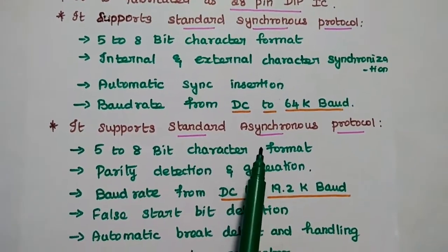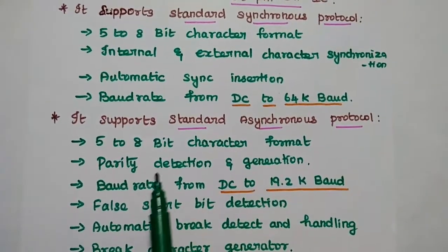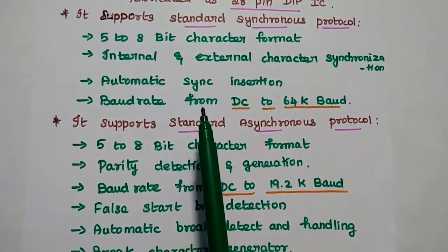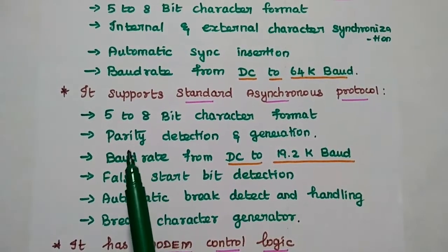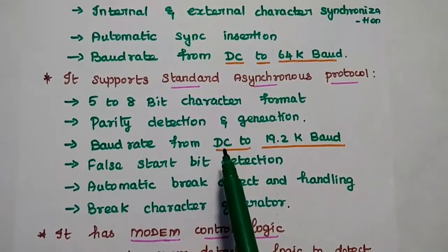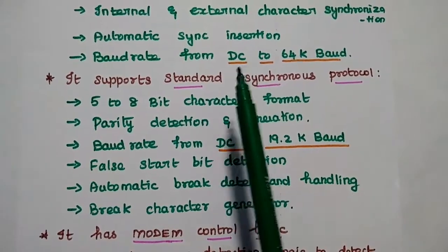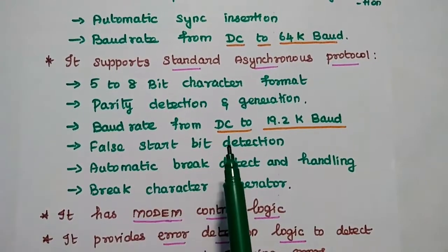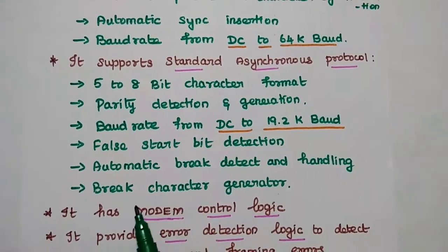For the asynchronous protocol, it also has a 5 to 8-bit character format. Parity detection and generation is available in asynchronous mode, but in synchronous mode there is no parity check. The baud rate for asynchronous is DC to 19.2k baud, while for synchronous it is DC to 64k baud. False start bit detection is possible, along with automatic break detect and handling and a break character generator.